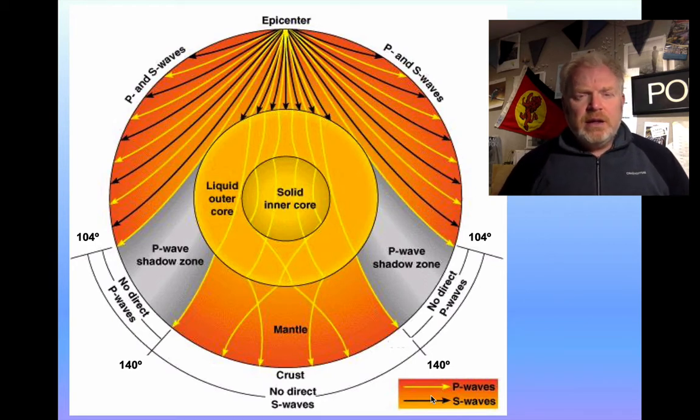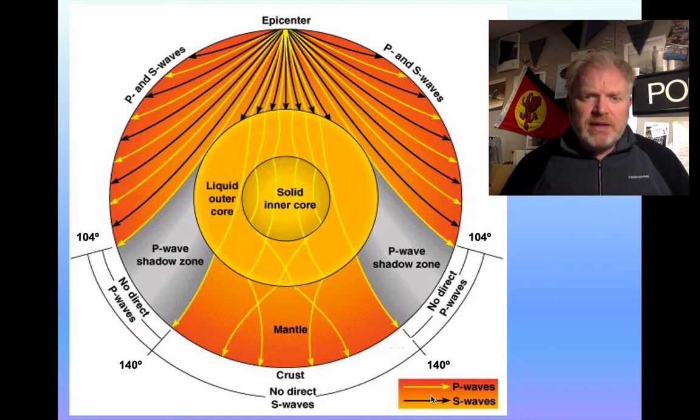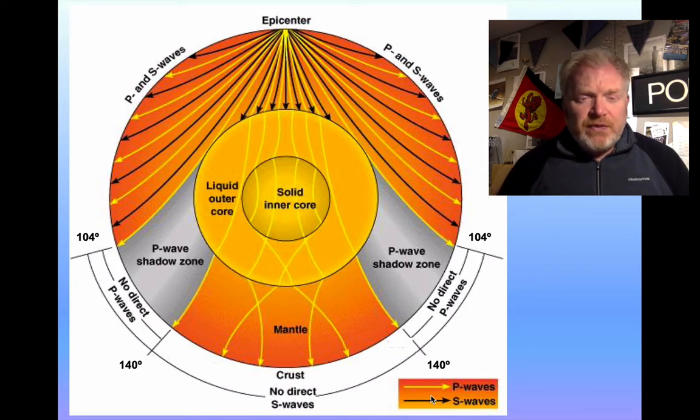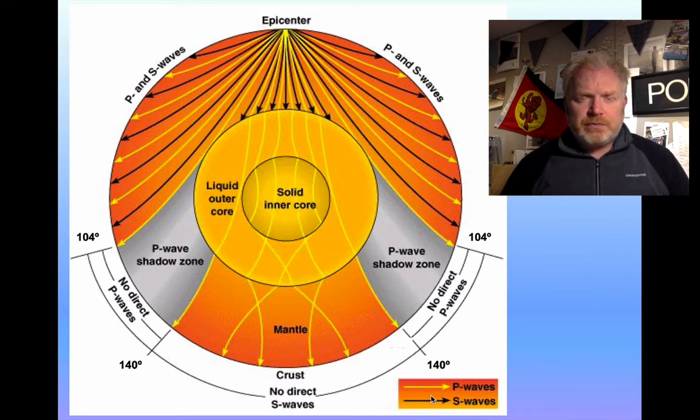And the reason for that is that the P waves get refracted. They get bent as they go into the liquid outer core. The reason for that is that the earthquake waves slow down significantly when they hit that liquid. Partly because it's dense. So the density increases. Partly because the liquid outer core has no rigidity.